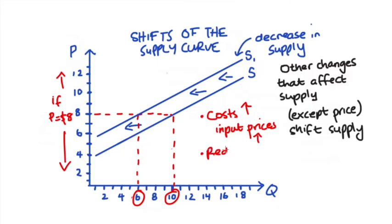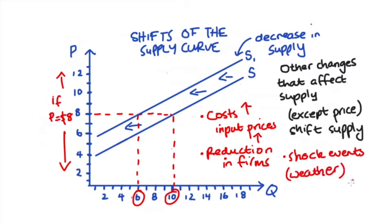If we are considering a market supply curve we would also get a decrease in supply if firms exit the industry and again at every price we would see less supplied at that price because of those exits. We might also think about or consider other kind of shock events that essentially make it more expensive to produce the good. So events such as perhaps big weather events that destroy crops or infrastructure or products.